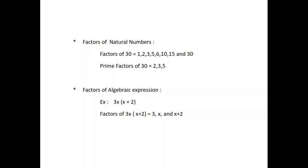Here first we can see the factors of natural numbers. We know the factors of 30 are equal to 1, 2, 3, 5, 6, 10, 15 and 30. Of these, 2, 3 and 5 are prime factors of 30.